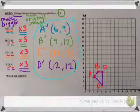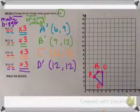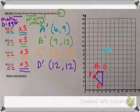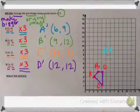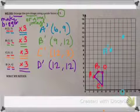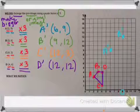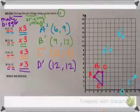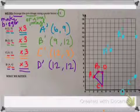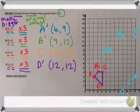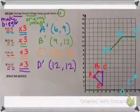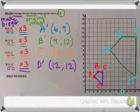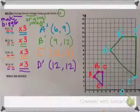Let's go ahead and plot all of our new points. A prime is at (6, 9) — go over 6 and up 9. B prime is at (9, 12) — go over 9 and up 12. C prime is at (12, 3). D prime is at (12, 12). Label each point, then connect them all. Here we have our scale drawing of trapezoid A prime, B prime, C prime, D prime.